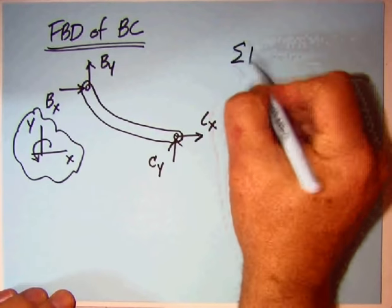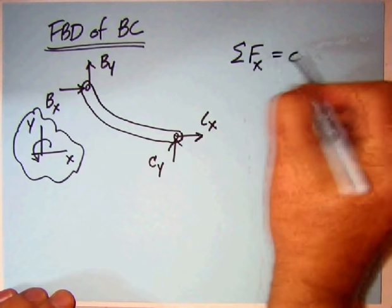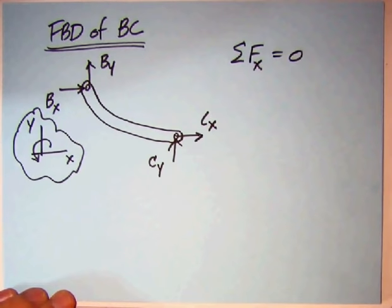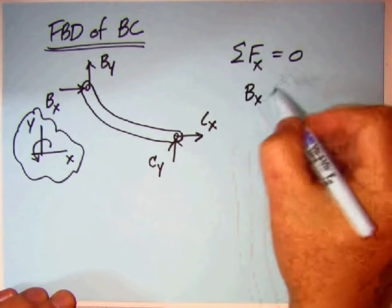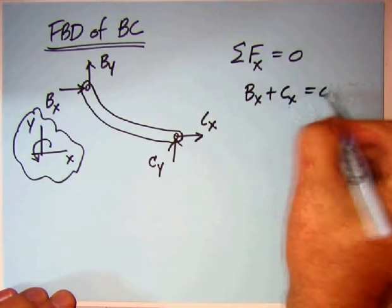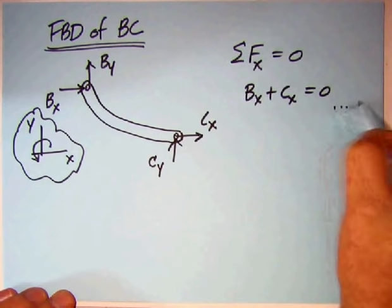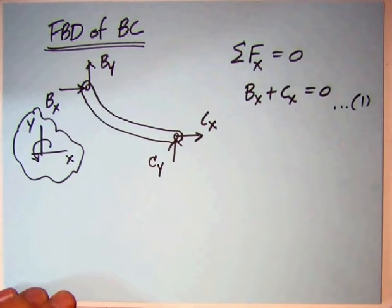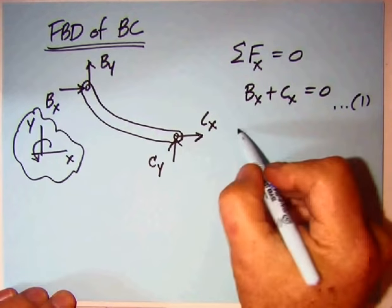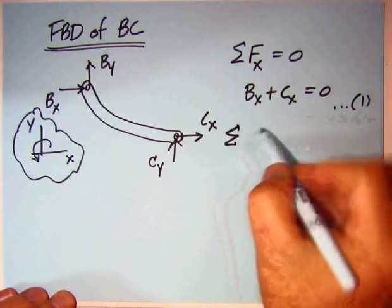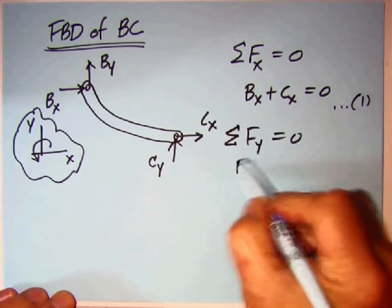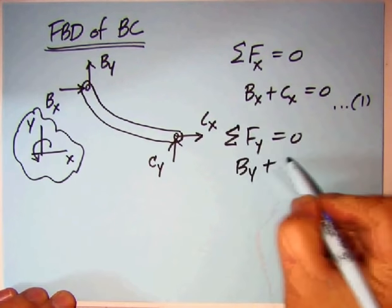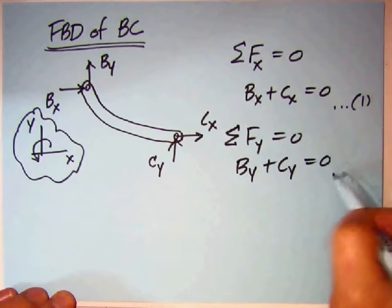Equations of equilibrium, there's three of them. First, the sum of the forces in the X direction are zero, so we have simply Bx plus Cx equals zero, and for tracking things, I'm going to call that equation one. Then, sum of the forces in Y equals zero, that's going to give us By plus Cy equals zero, equation number two.